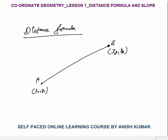What students usually do is cram the formula. But you don't have to cram — first understand, then remember. Now there are two points: point A with coordinates (x1, y1) and point B with coordinates (x2, y2). We need to calculate the distance d between these two points. Two points always make a straight line.